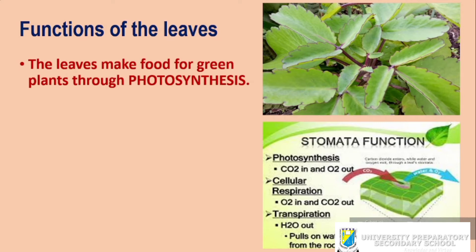The CO2 gets into the leaves, and with the presence of water in the leaves via the stomata, the chlorophyll helps the plant to produce starch. When this starch is produced, it is stored either in the roots or in the stem.